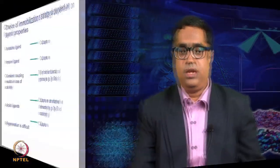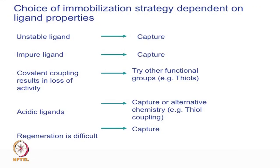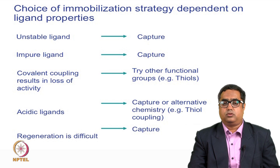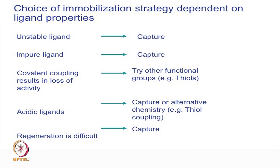The choice of immobilization strategy depends on the kind of molecule we have. If we have an unstable or impure ligand, we go for capture. If covalent coupling leads to loss of activity - meaning the analyte is not binding - we will not proceed with covalent coupling but instead identify a capture process. Molecules with a PI very close to the acidic range like pH 2 or 3, or molecules where regeneration is very difficult, are also preferred candidates for the capture process.